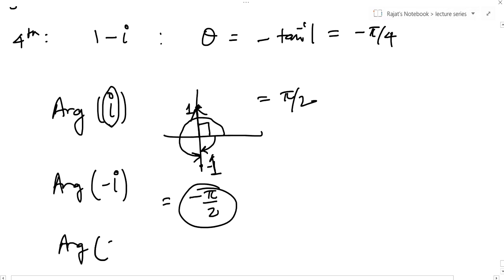What will be the argument of 2? So 2 is a real number, it will lie here. This is the complex number. What is the angle that this complex number is making with the positive direction of x-axis? Zero, because it is parallel to the positive direction of x-axis. So its argument will be 0.